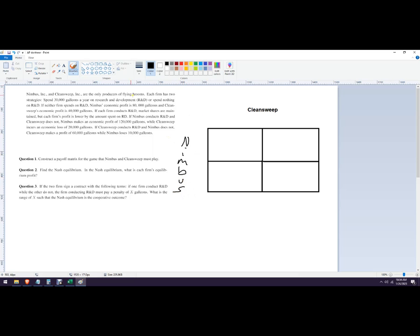And we've got our two scenarios here. They can spend 30,000 gallons a year on research or spend nothing on R&D. So to abbreviate this, I'm just going to call this one Spend, No Spend. You could say No R&D, whatever. And then this is Spend and then No Spend.